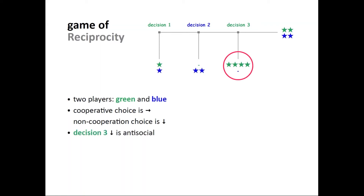If the game reaches the last stage — if player green cooperated in the first decision node and player blue cooperated in the second — then player green's decision to stop the game at decision node three is antisocial, because they choose to keep all money for themselves and leave nothing to the blue player instead of sharing the large payoff equally. The decision to cooperate at the last decision node is prosocial — player green chooses to share the large payoff equally.